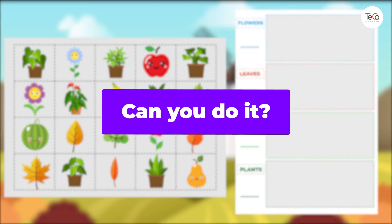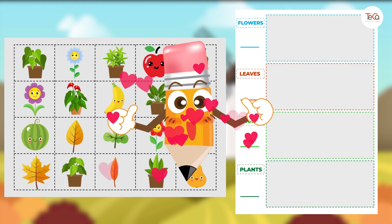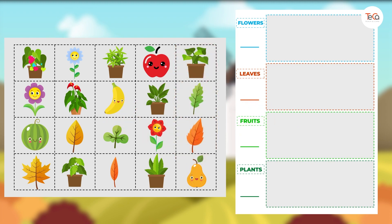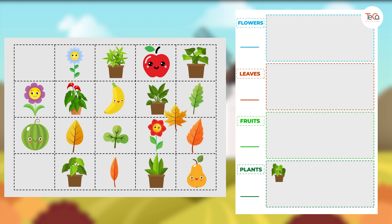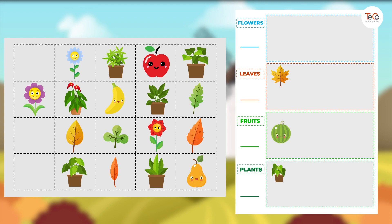Can you do it? Let's see if you did it right. This is a plant — put it into the plant group. Put it into the plant group. This is a leaf — put it into the leaf group. A fruit — put it into the fruit group. A flower — put it into the flower group.